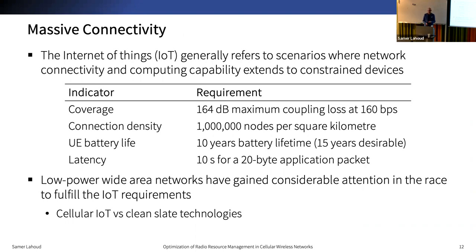Wireless access technologies play a pivotal role in the adoption of the Internet of Things, helping to meet requirements of massive connectivity in terms of battery lifetime, capacity, and coverage. The mMTC scenario requires a maximum coupling loss of 164 dB, a battery lifetime beyond 10 years, and a density exceeding 1 million nodes per square kilometer. Low power wide area networks follow two design principles: leveraging existing cellular technologies as in cellular IoT, or devising new clean-slate technologies such as LoRaWAN.